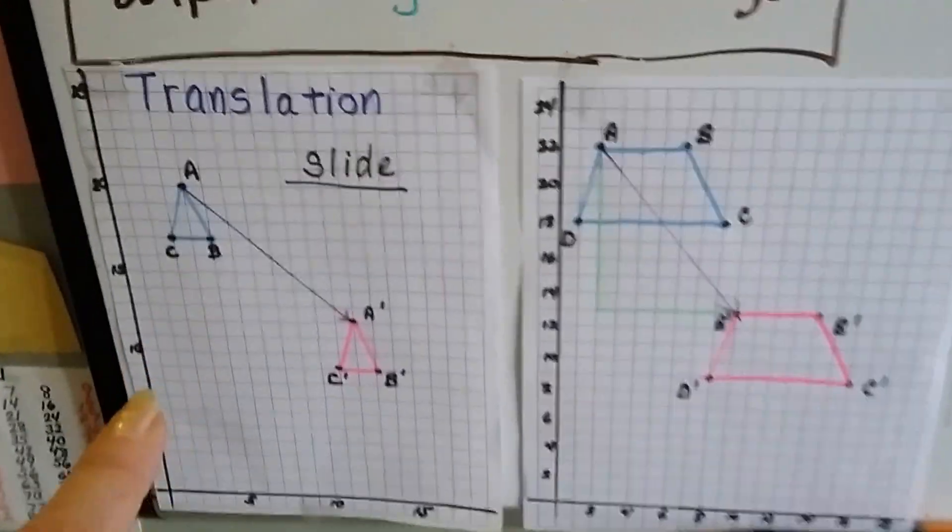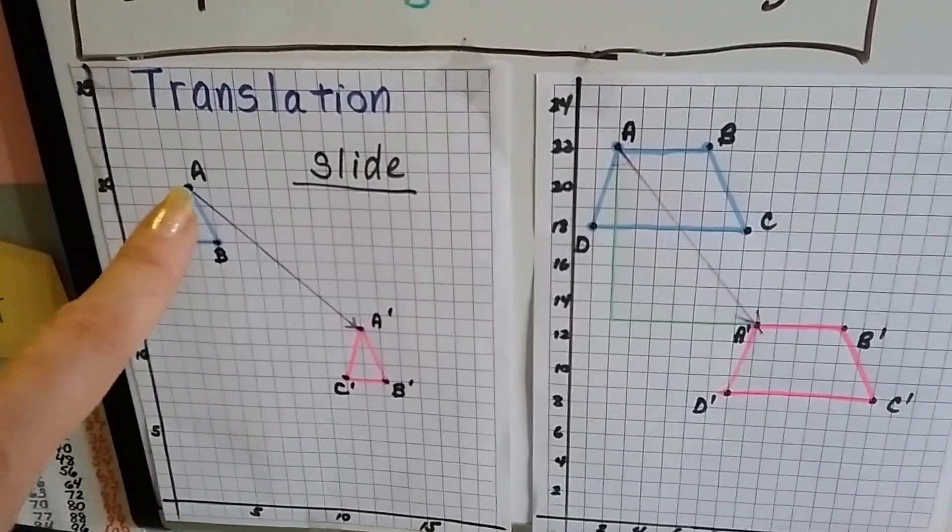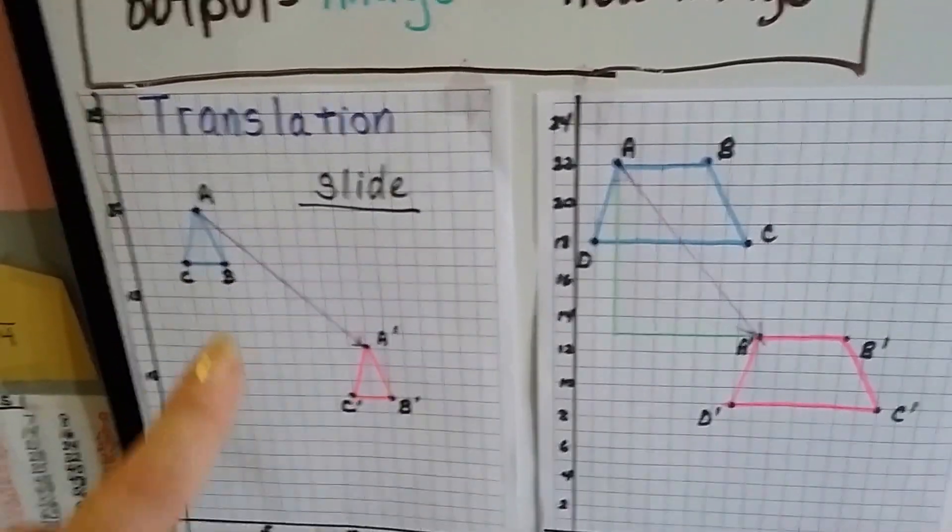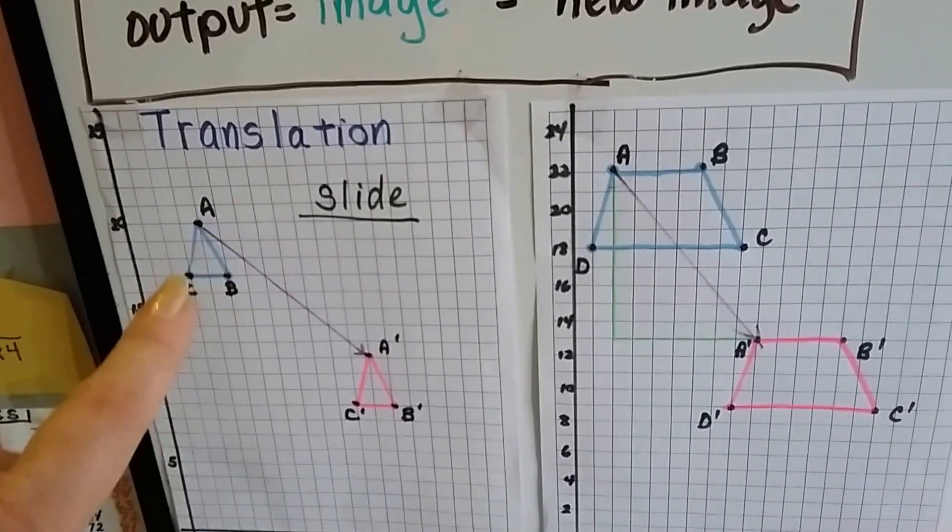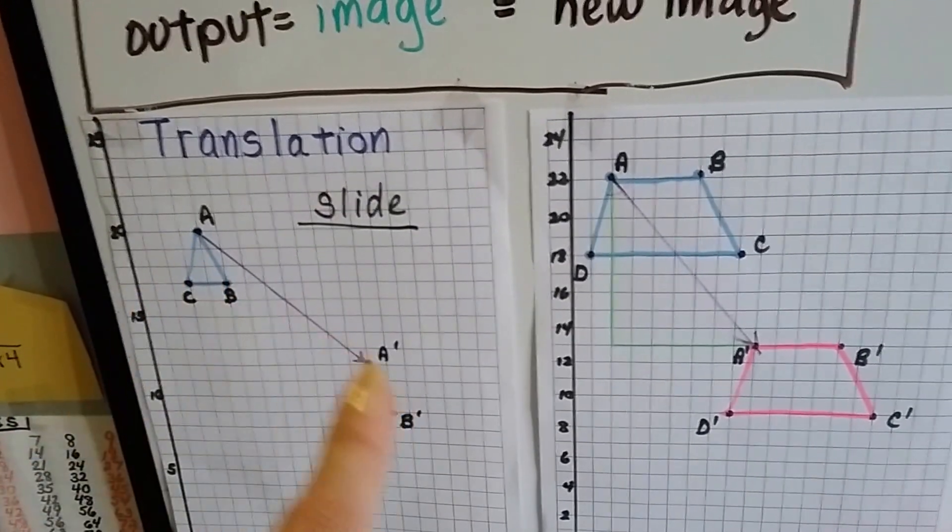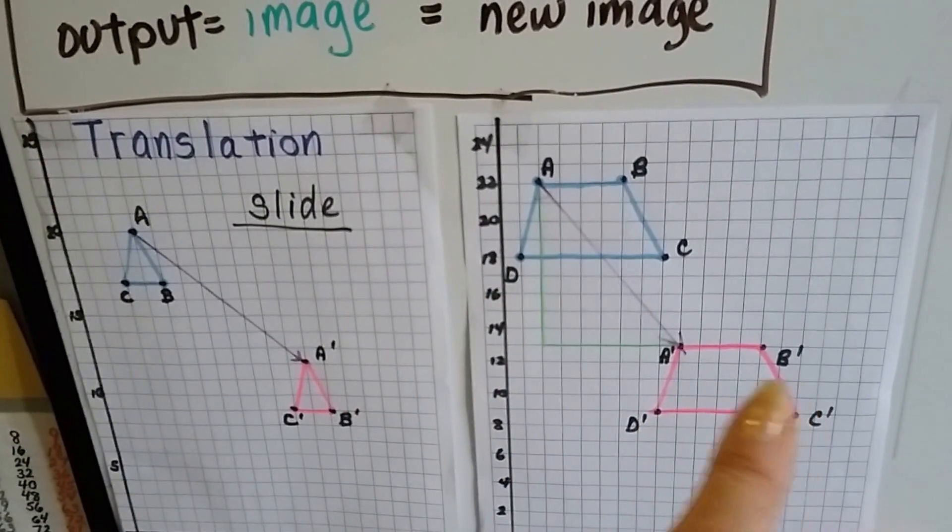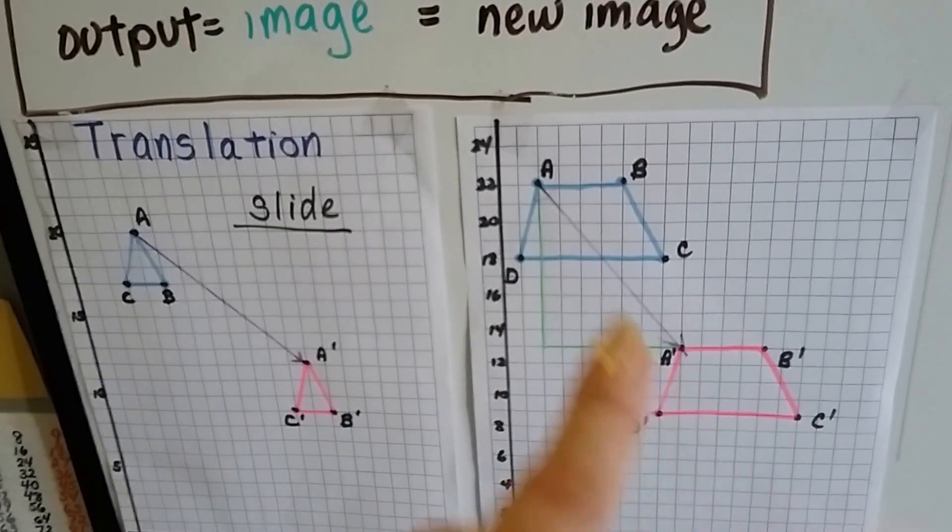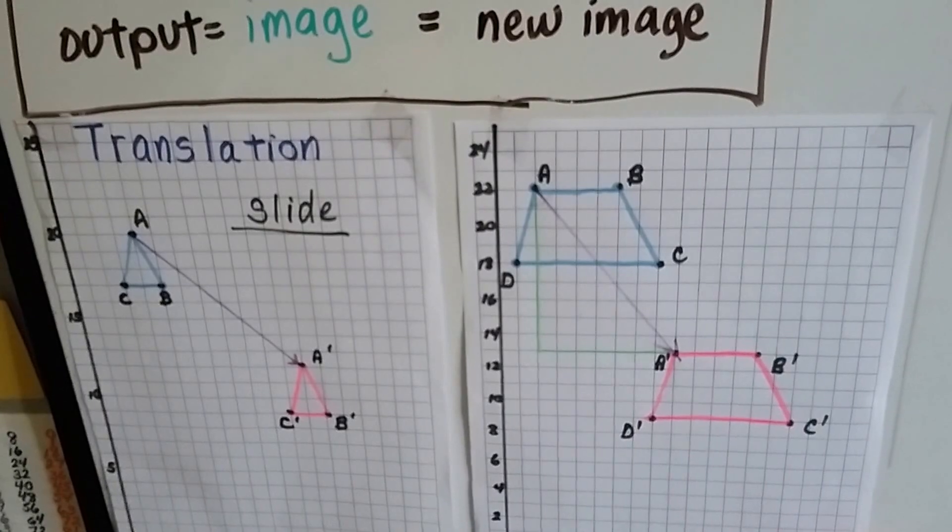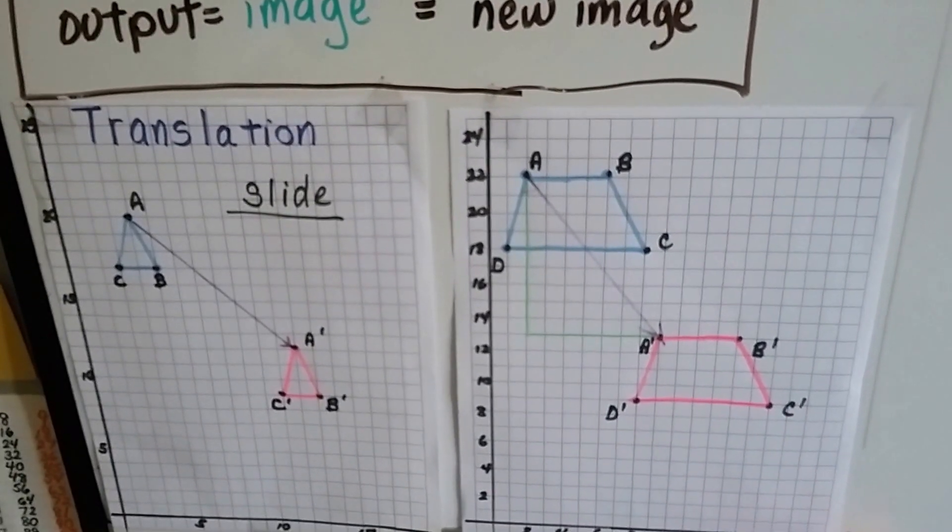So in a translation, our triangle is going to slide to a new position. It's going to keep the same sides, the same angles, it's just going to be in a new spot. Our trapezoid is going to keep its same sides and angles, interior angles, it's just sliding to a new spot. That's a translation, it slides.